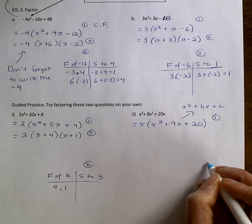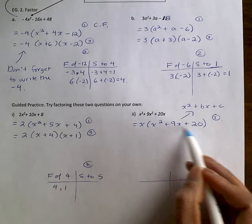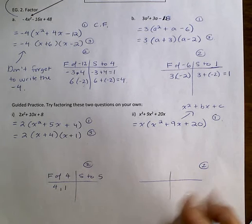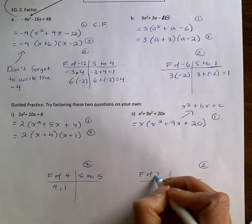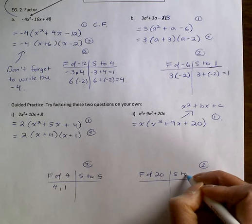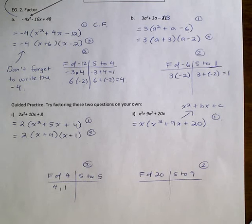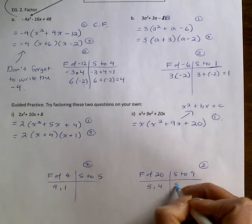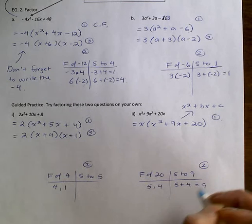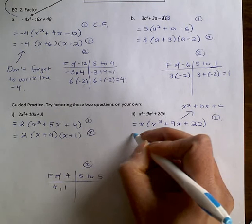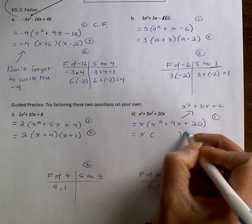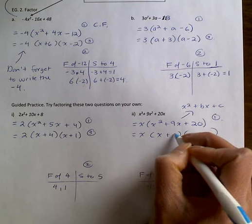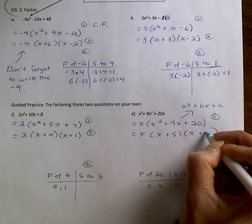Our second step is we're going to factor the trinomial brackets further. So we're looking for factors of 20 that add up to 9 or sum to 9. So the numbers that work here are 5 and 4 because 5 plus 4 is 9. And then we're going to now write our final answer. So we have x plus 5 and x plus 4. And that was our third step.